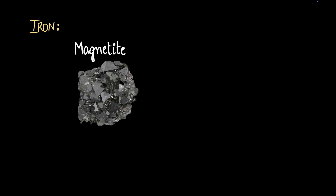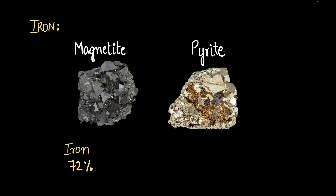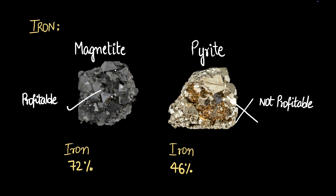For example, to extract iron from nature, consider magnetite — 72% of magnetite is iron. Compare that to pyrite, which looks shiny but has only 46% iron. These are real minerals present in nature. Because magnetite has far higher iron concentration, it's profitable to extract iron from it. With pyrite, the low iron concentration means extraction would be very expensive. That makes magnetite an ore, while pyrite does not qualify. Both are minerals, but only magnetite is an ore.